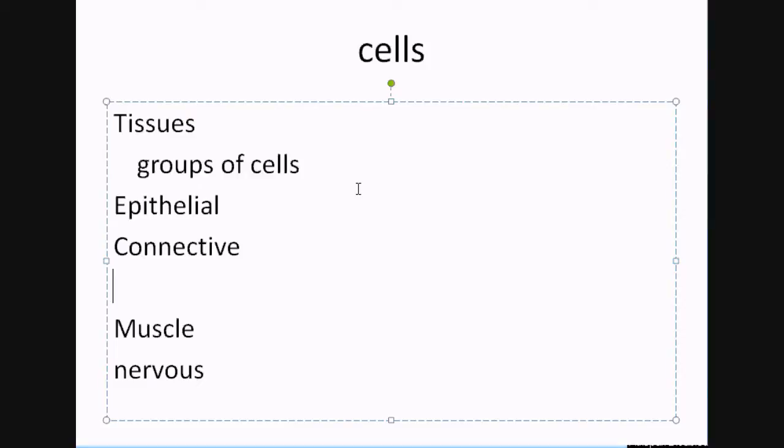Then we have muscle tissue, which you probably have an idea what muscle tissue is. This is the kind of tissue that provides what we refer to as contractile tissue, because what it can do is contract and relax. So muscle can contract and relax.